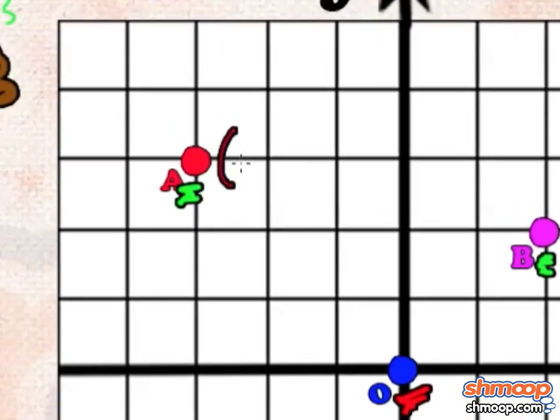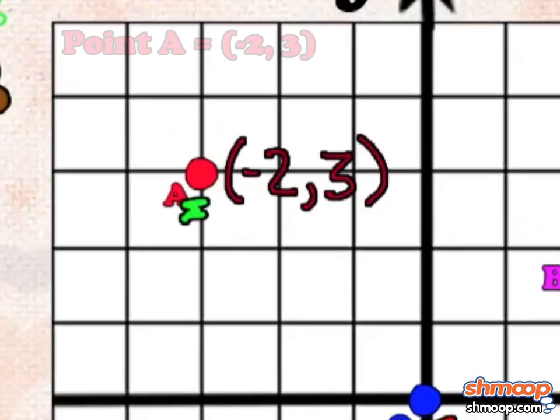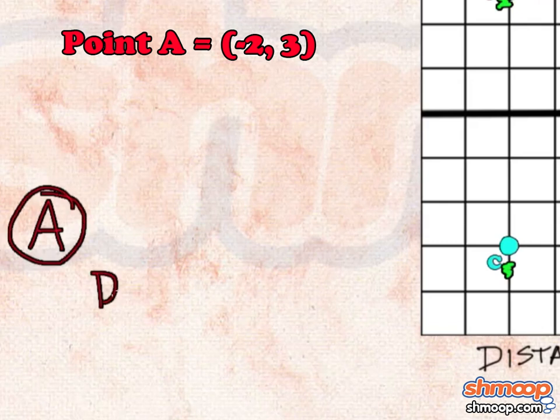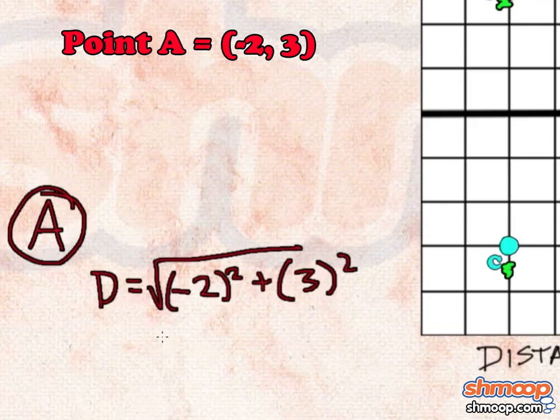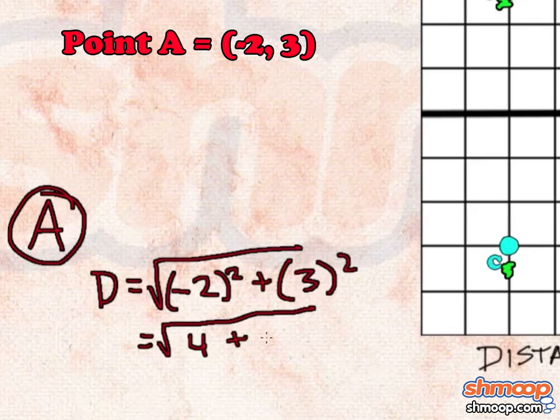The coordinates of point A are negative 2, 3. So when we plug those coordinates into our formula, it gives us the distance from that cow to Bossy, which equals the square root of 13.